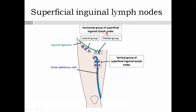Next we have the superficial inguinal lymph nodes, which are T-shaped and divided into two groups: the horizontal group and the vertical group. The horizontal group can further be divided into medial and lateral sub-groups, with around five to six lymph nodes. The vertical group lies in close relation with the terminating part of the great saphenous vein.